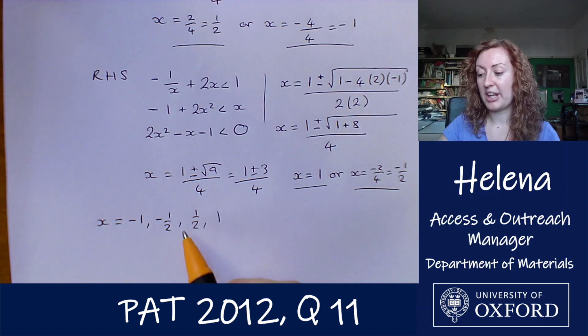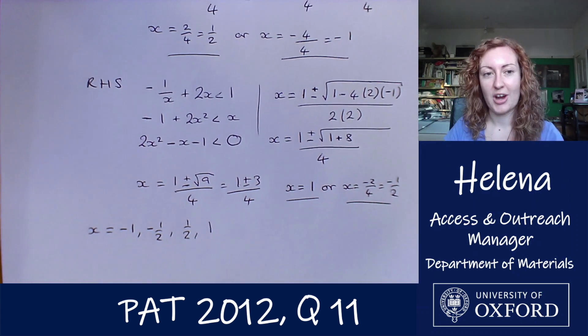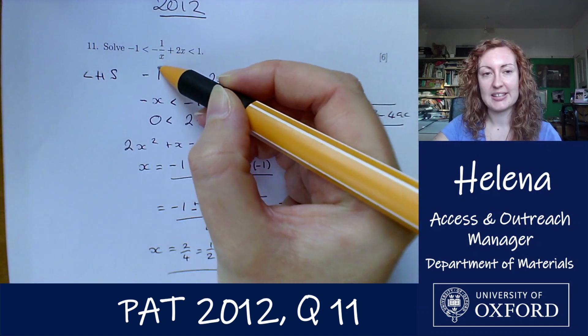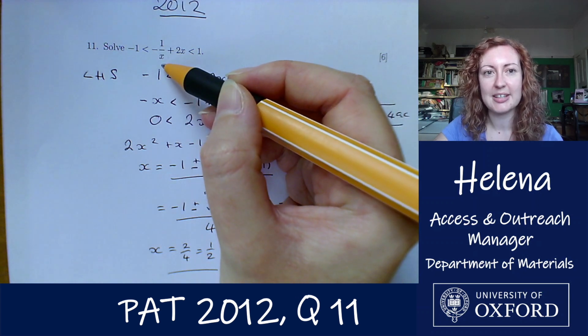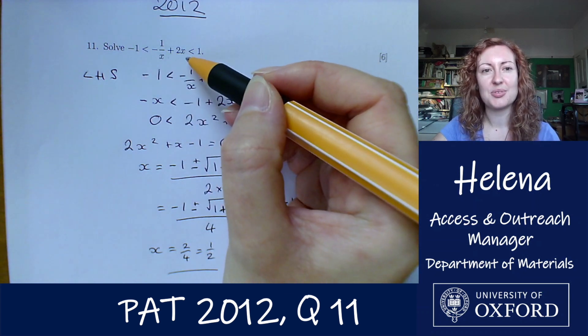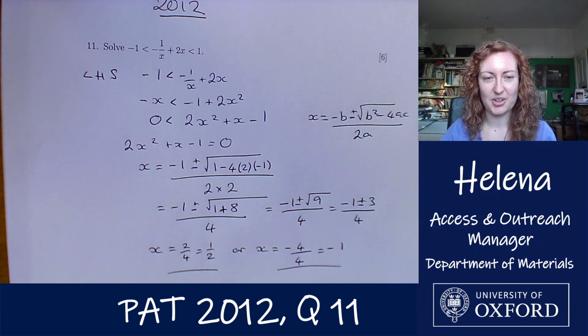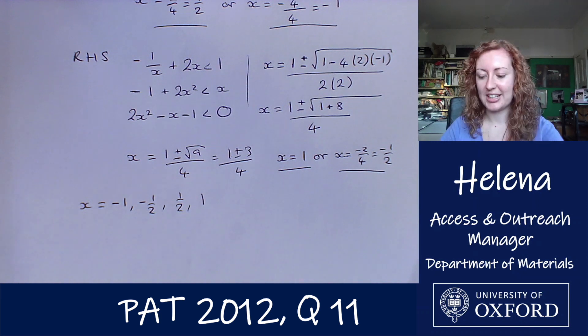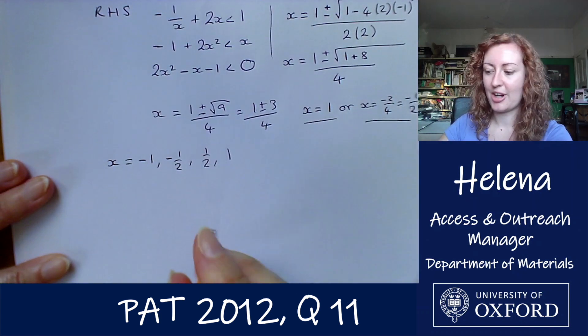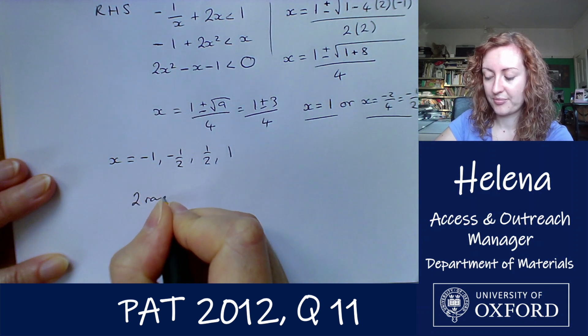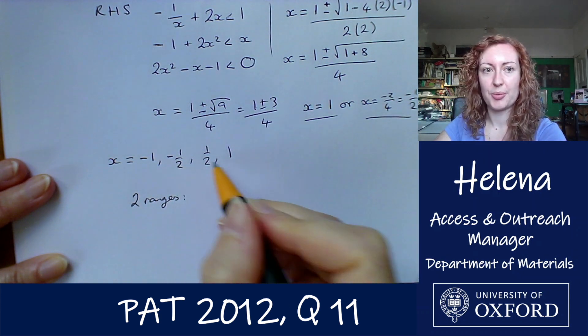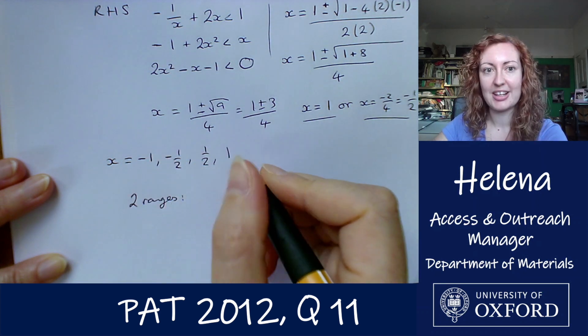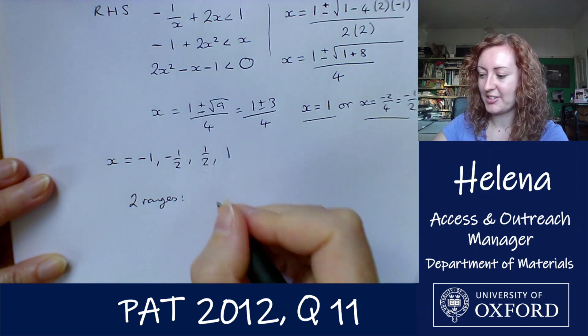For example if you tested in the middle here, say tried x equals zero, we can immediately see that this term here is going to blow up to infinity because we're dividing by zero. So for x equals zero this inequality isn't going to hold. If we check a few values or think logically, we can see that we're going to have two ranges for our values of x. It makes sense when you put them in ascending order. We're going to have a range of x values between these two values and then another range between these two values here.